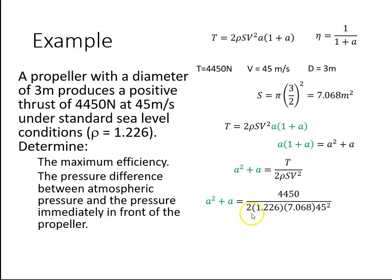I plug the values in. The T is 4,450, we have 2 with the density, we have the area, we have the 45 from the V here. That will give me a value of 0.1268.